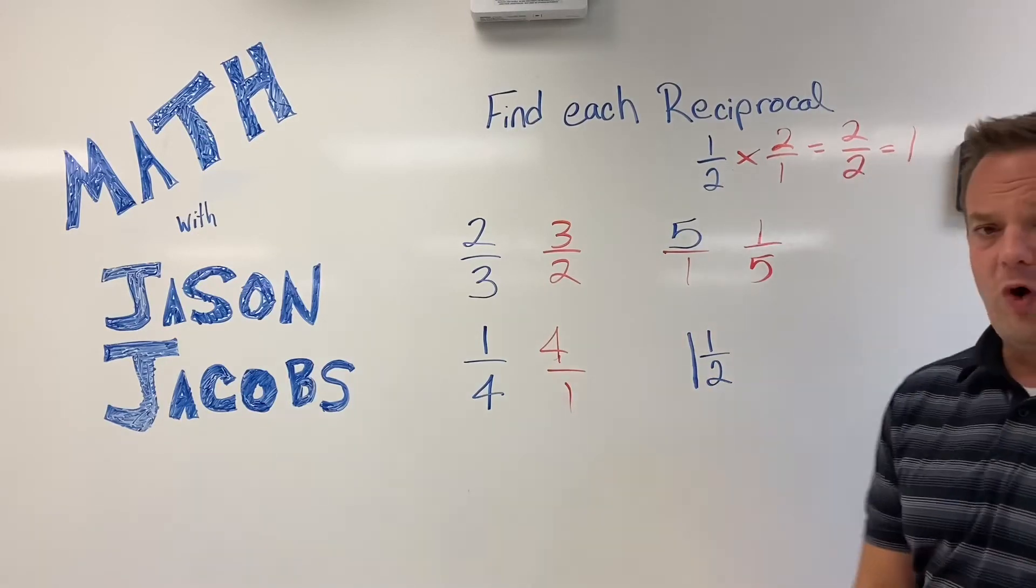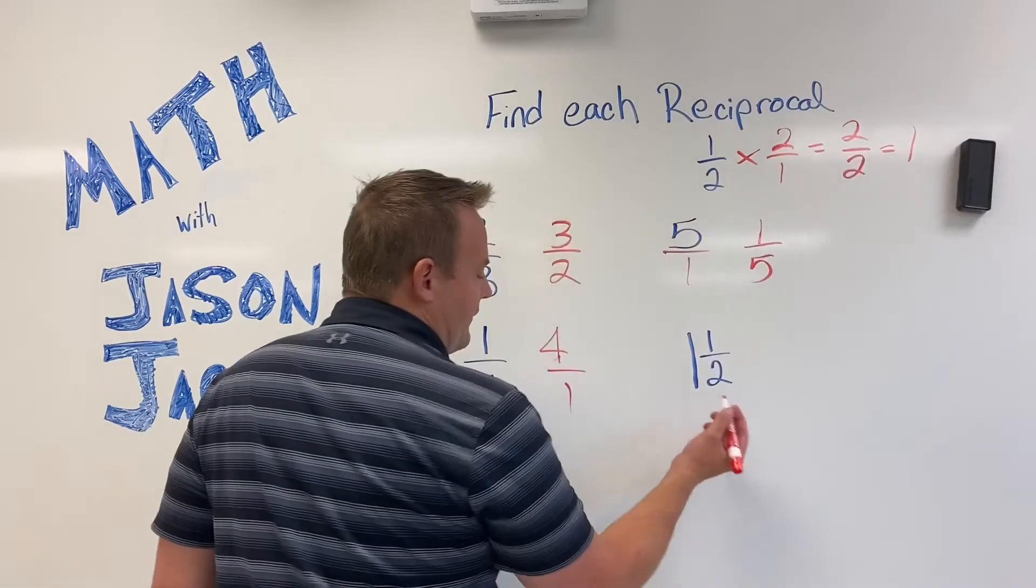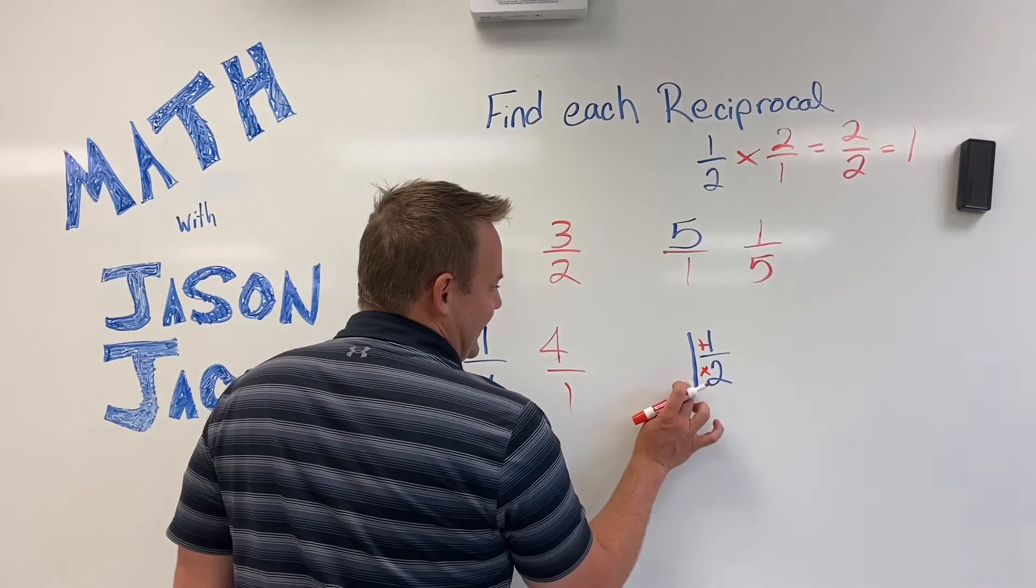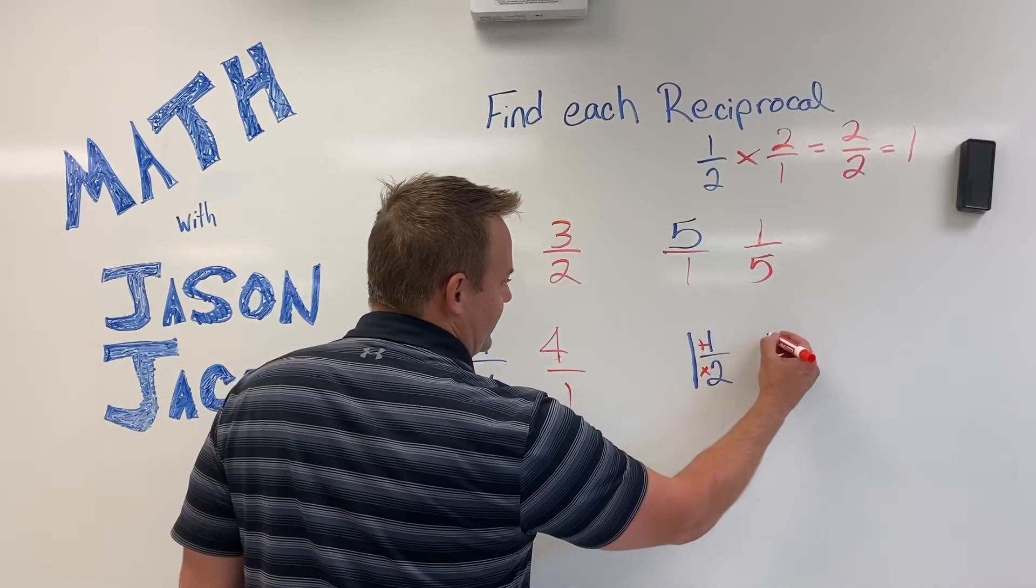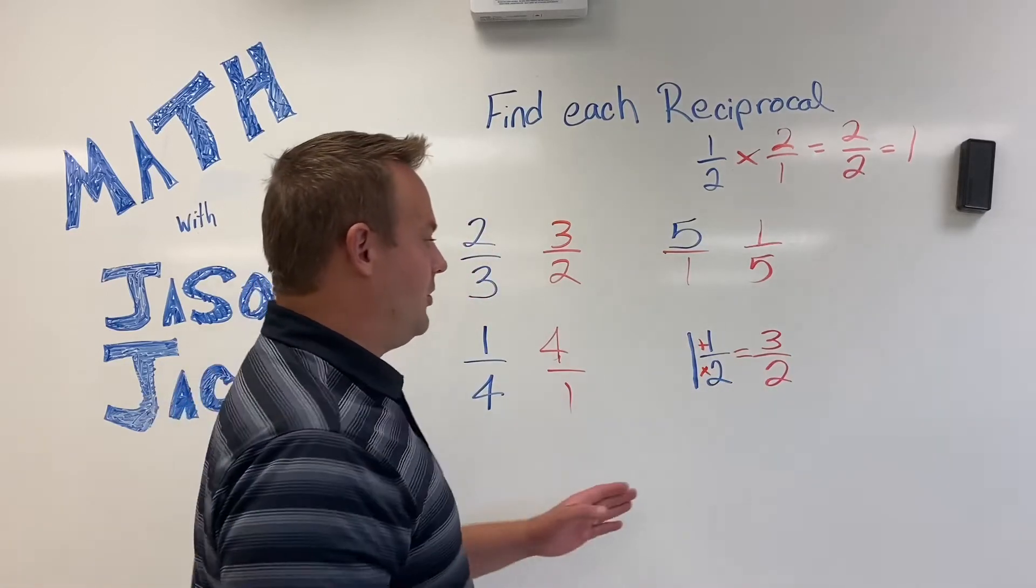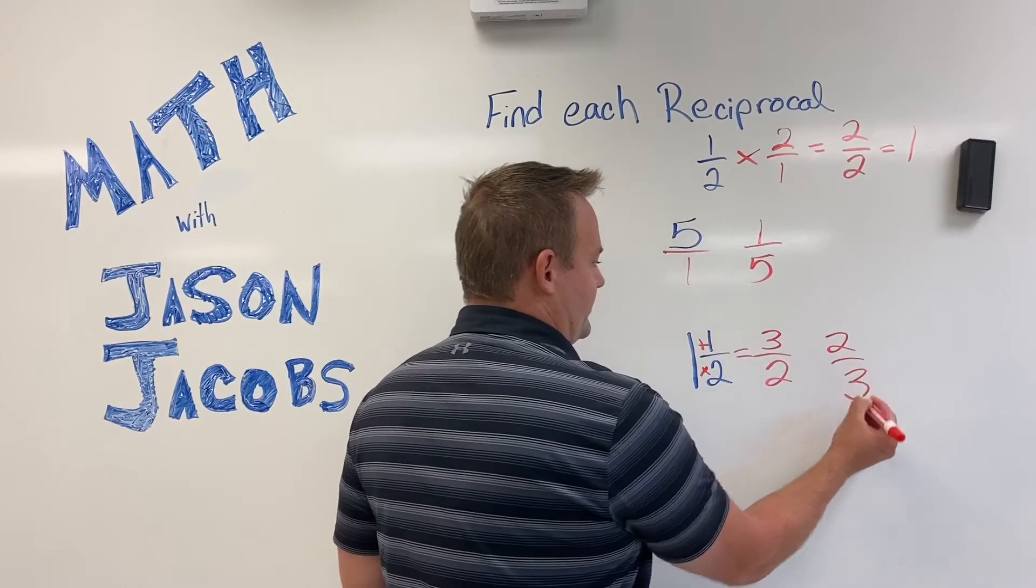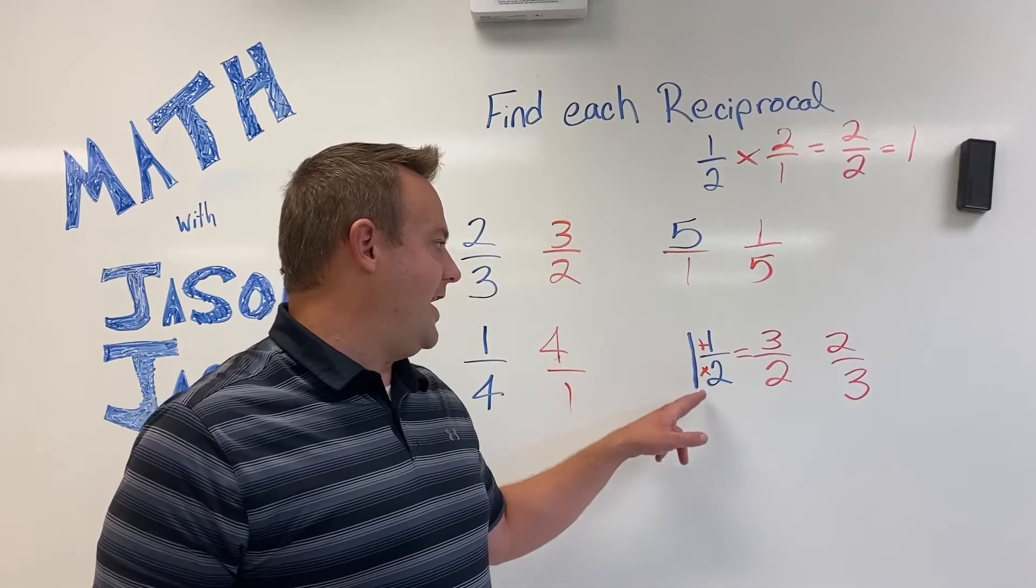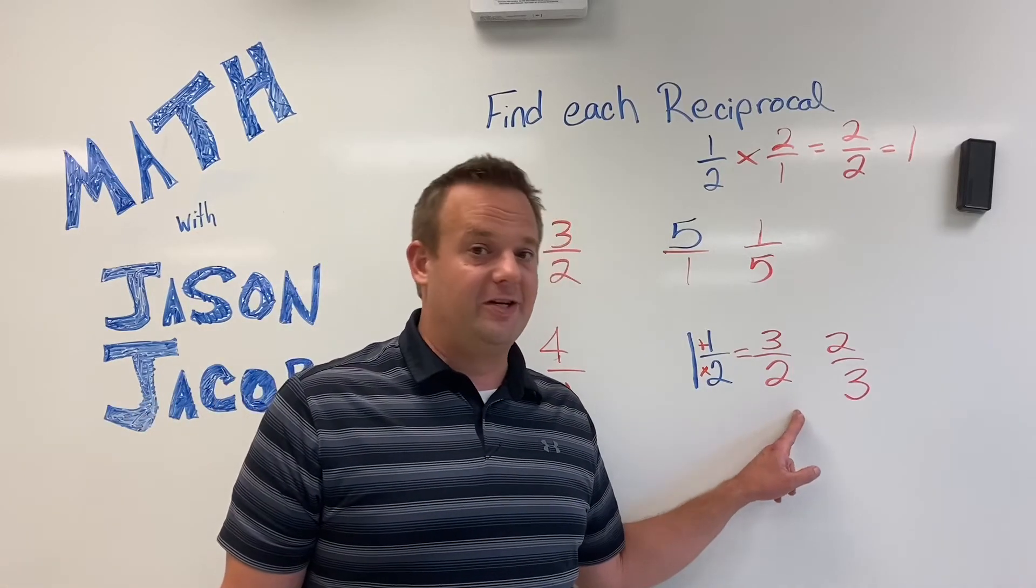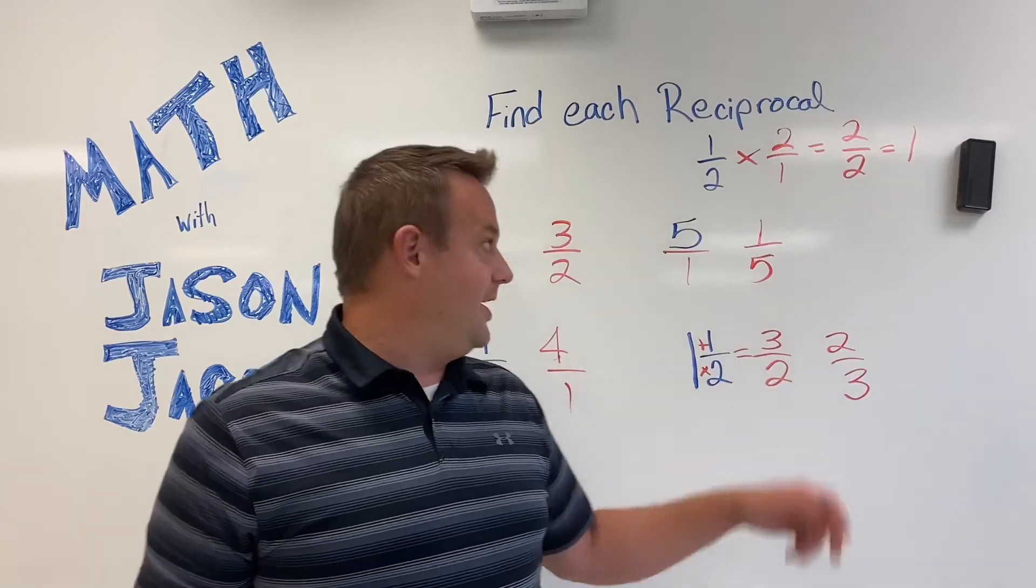Okay, what's the reciprocal of one and one half? Now we're getting a little tricky. First, convert it to an improper fraction. Two times one is two plus one is three halves. And the reciprocal of three halves is two thirds. So, the reciprocal of one and one half is two thirds. First, convert the mixed number into an improper fraction. Then, once it's an improper fraction, you can do your business and reciprocate it.